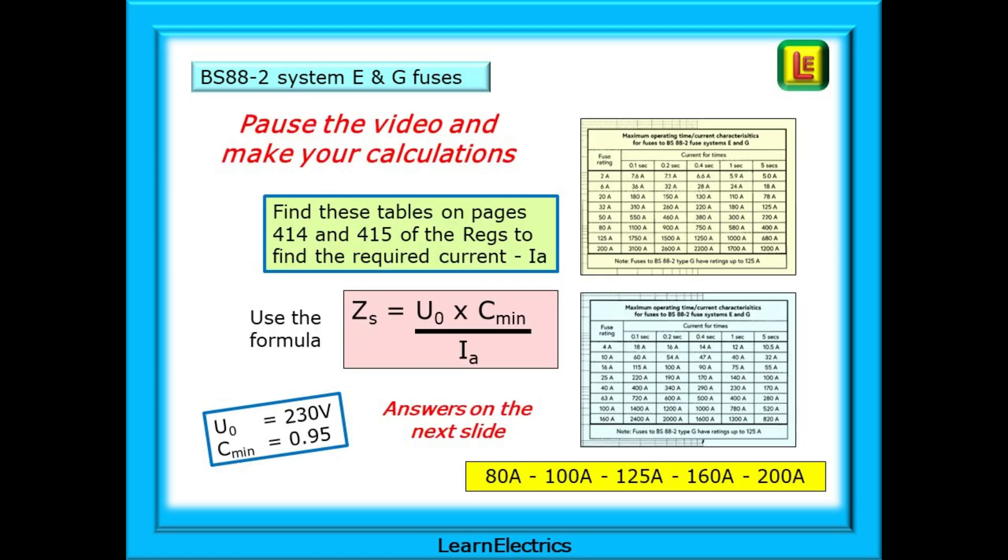You'll find these tables on pages 414 and 415 of the regs. Find the required current Ia for each fuse rating. It is the same formula as before. U0 and Cmin are unchanged, so the top row will be the same. All that we need to do is to put new numbers into the bottom row. Pause the video and make your five calculations, and the answers are on the next slide.